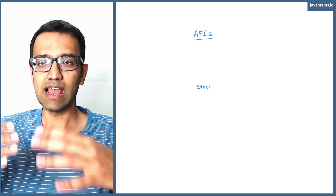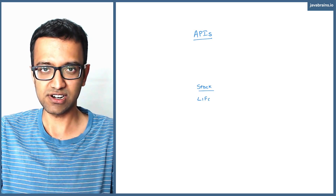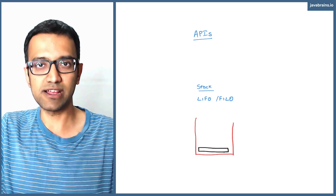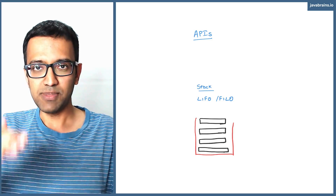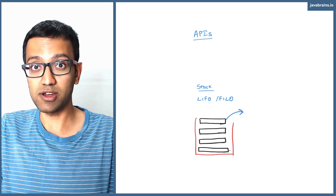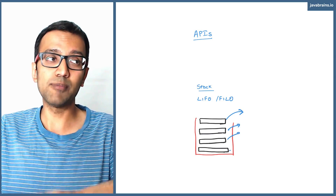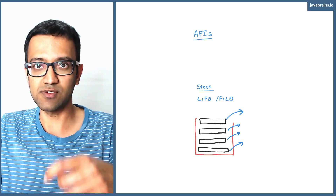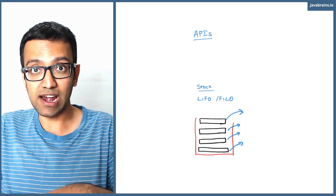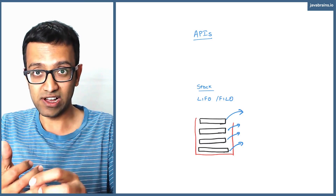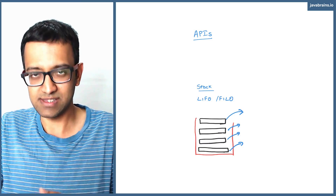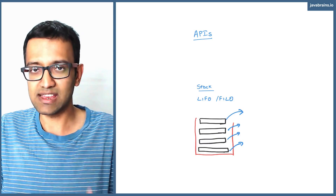A stack is a last-in-first-out data structure — a first-in-last-out data structure — kind of like a stack of plates. You put a plate down, then another plate, then another plate. When you need to take out a plate, the plate that was put in last gets out first, and the plate that was put in first is all the way at the bottom and goes out last. So you want to use a stack to perform this operation — put things in and remove things, but you don't get control over which particular item to remove. That's the last-in-first-out structure.